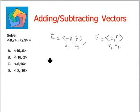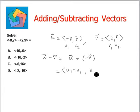So vector u minus vector v can be written as vector u plus negative of vector v. So this is equal to, we had seen earlier, u1 minus v1 and u2 minus v2.